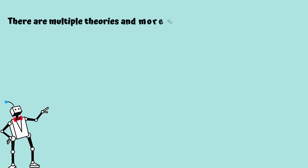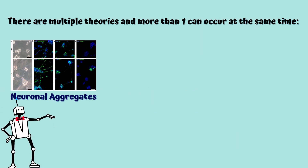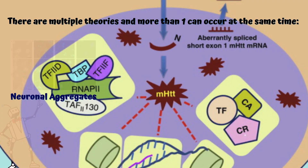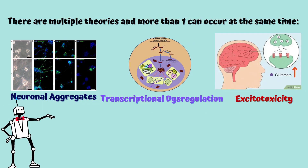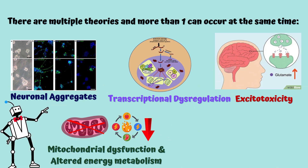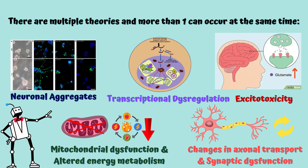There are multiple theories of pathophysiology and more than one can occur simultaneously. These include neuronal aggregates, transcriptional dysregulation, excitotoxicity due to a combination of increased glutamate and glutamate agonist release from cortical afferents, mitochondrial dysfunction and altered energy metabolism, as well as changes in axonal transport and synaptic dysfunction.